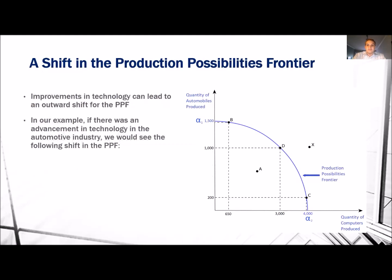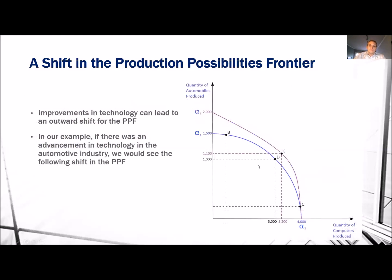A shift can occur for the PPF if there are improvements in technology. Improvements in technology can lead to an outward shift for the PPF. In our example, we are going to assume there is an advancement in technology for the automotive industry. This is how we can see that graphically — the PPF shifts outward.